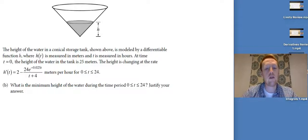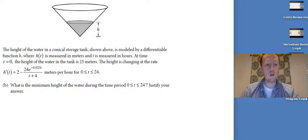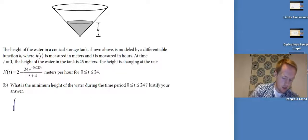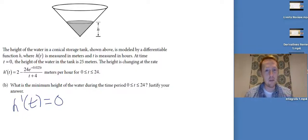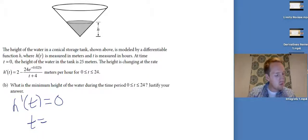We want to find the minimum height of the water during the time period 0 to 24. Just like in the last integrals example, I am finding a minimum on a closed interval — that means I need to use the candidates test. So I know two of my candidates already are 0 and 24. I also need to find my critical points by setting H prime of T equal to 0. We're going to go into the calculator for this because that function is a nightmare. That gives me T equals 6.261256.